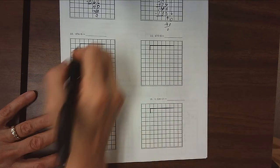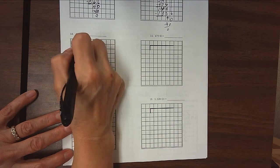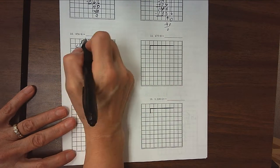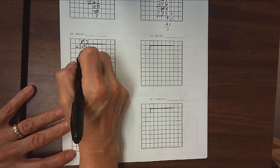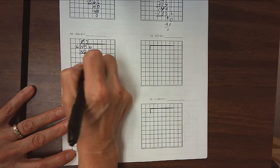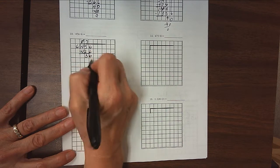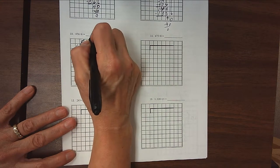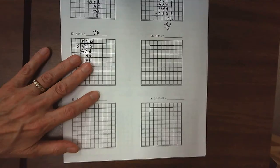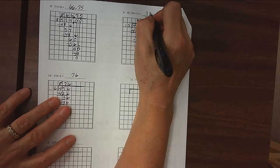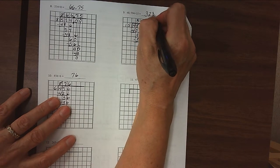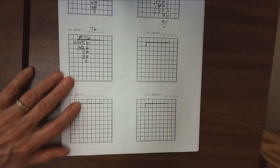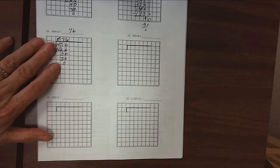456 divided by 6. 456 goes in the house, 6 goes out of the house. 6 doesn't divide into 4. 6 divides into 45 seven times because 7 times 6 is 42. Do my subtraction, I get 3. Bring down my 6. 6 divides into 36 six times. Do my subtraction, I get 0. So my answer is 76. Let me go back here and fill in our answer up here, 3,239 and 6 tenths. I kind of forgot to fill that one in.